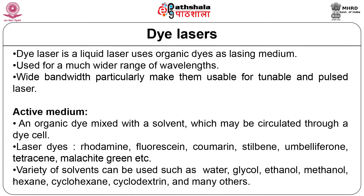The first example of a tunable laser is the dye laser. In a dye laser, organic dyes are used as the lasing medium. It is used for a large range of wavelengths, making it particularly suitable for tunable and pulsed laser applications. The laser consists of an organic dye mixed with a solvent which may be circulated through a dye cell. Some laser dyes include rhodamine, fluorescein, coumarin, stilbene, umbelliferone, tetrazine and malachite green. A variety of solvents can be used such as water, glycol, ethanol, methanol, hexane, cyclohexane, cyclodextrin and others.